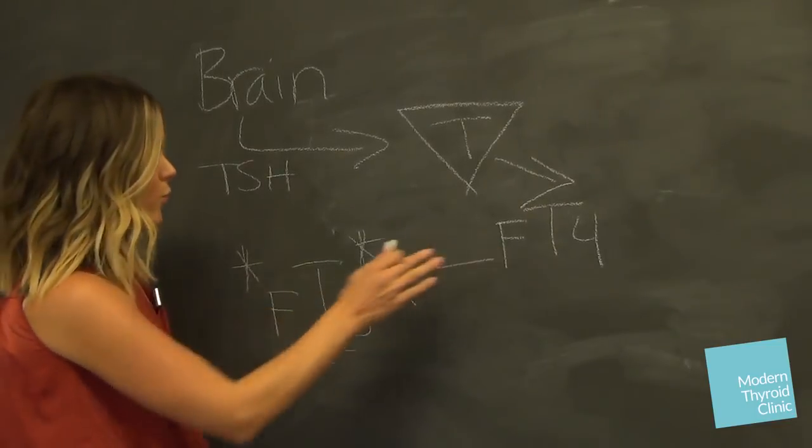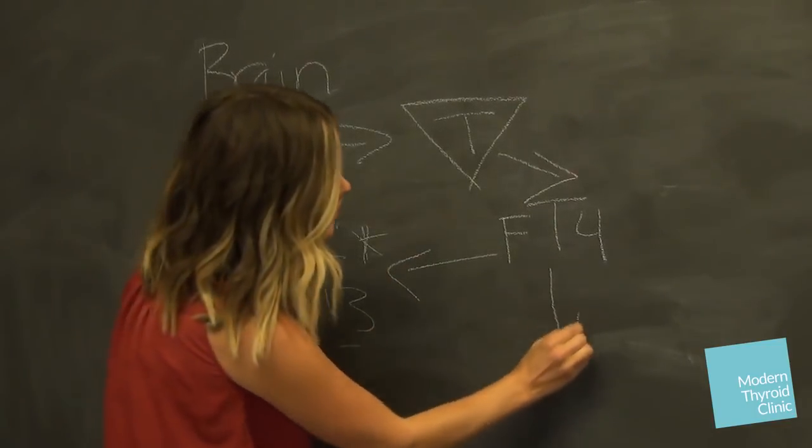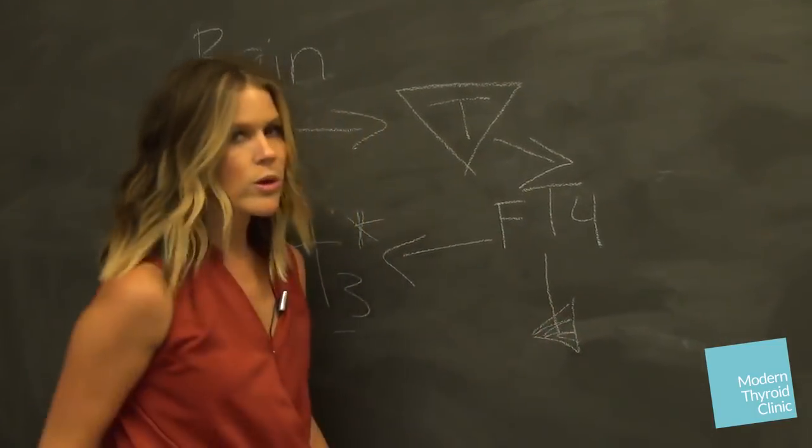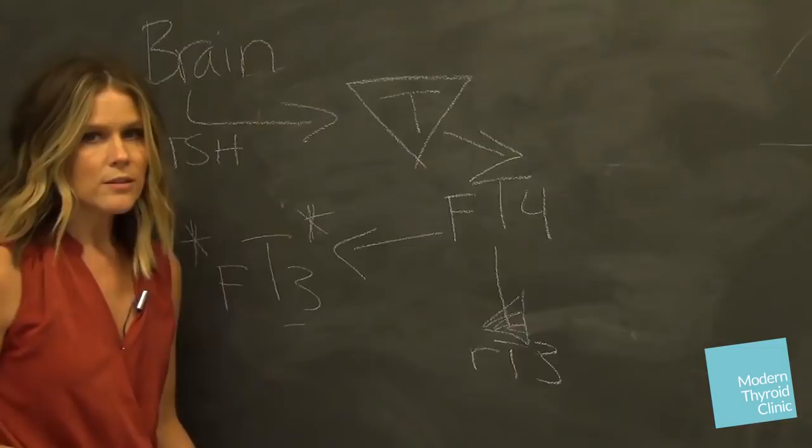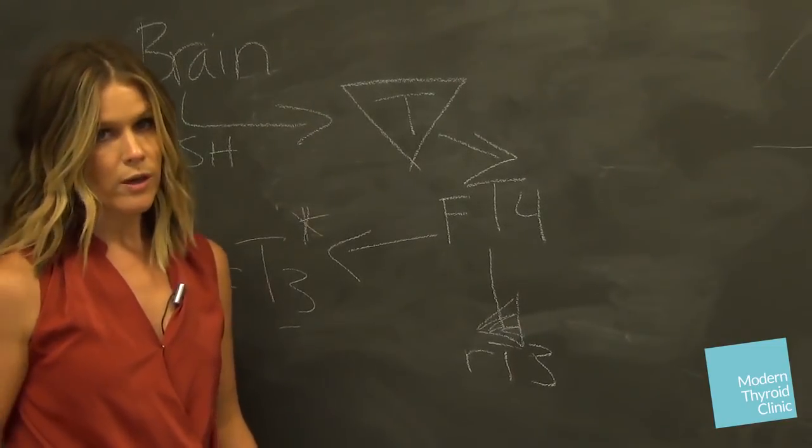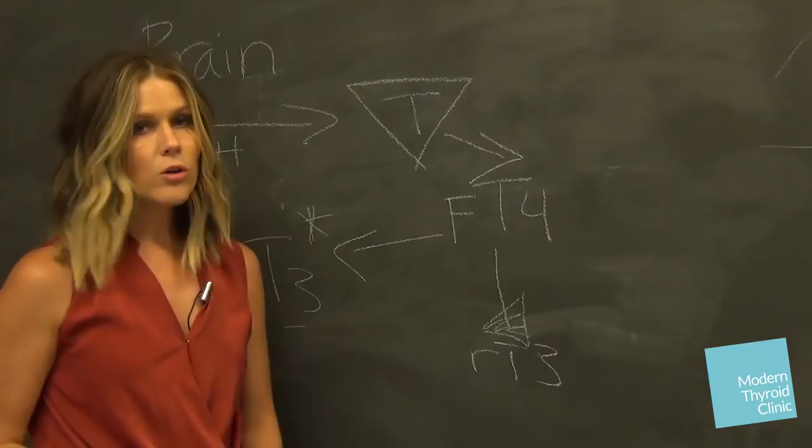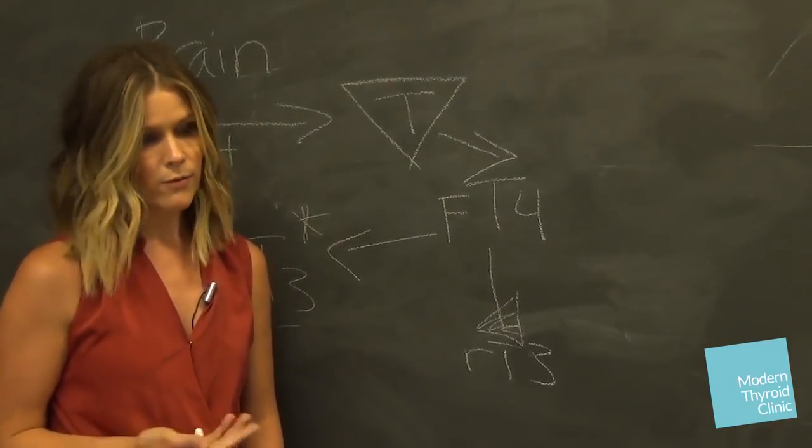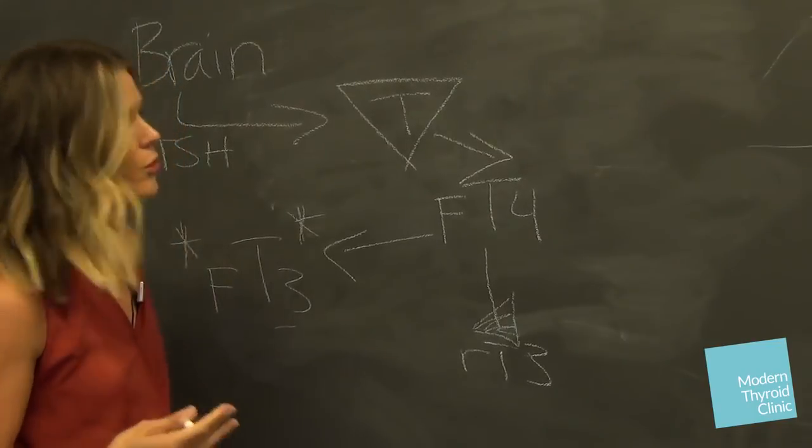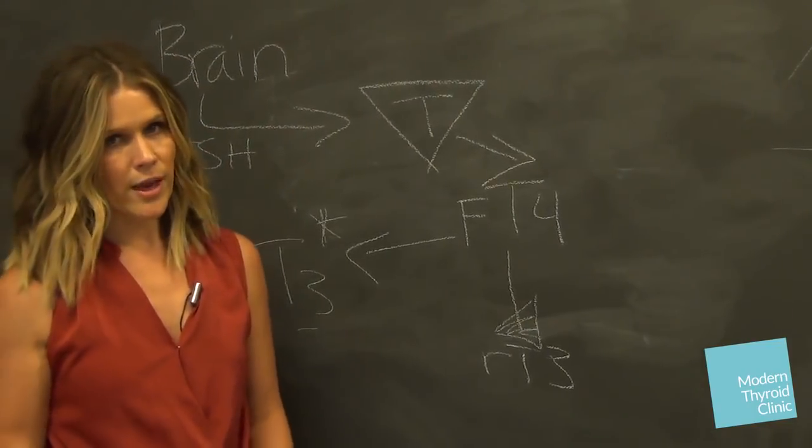So either your T4 becomes T3, or it gets shunted to your body's inhibitory mechanism called reverse T3. Reverse T3 competes for production and absorption of free T3, and it's called reverse T3 because it's actually T3 in reverse. It's a mirror image, like if you hold out your hands. So let's kind of put these pieces together.